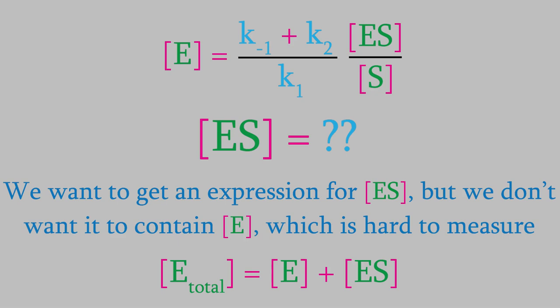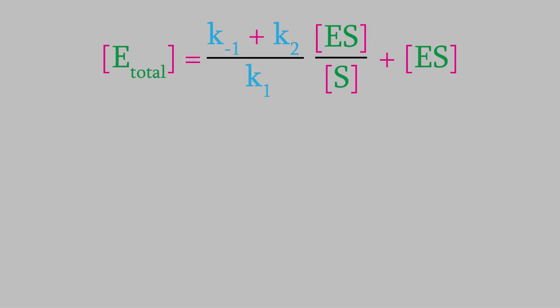If we plug in our expression for E into this equation, we get this. This may not look like an improvement, but this is actually very useful. Look at what this expression has in it. First, there's E total, the total amount of enzyme. This is actually really easy to measure. If this is a solution of enzyme we've made in the lab, we should know exactly how much total enzyme we put in the solution.